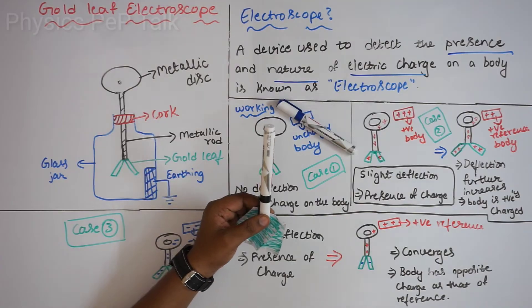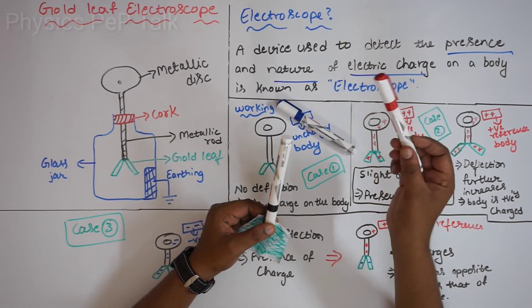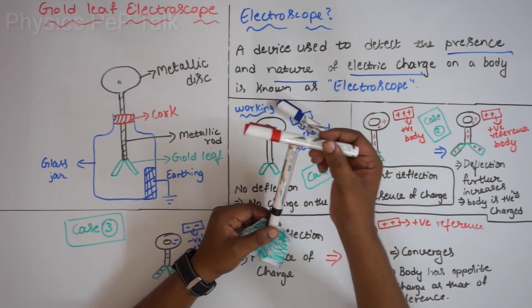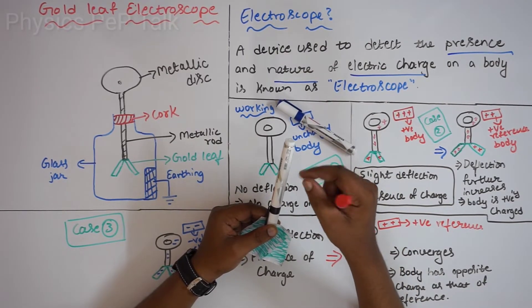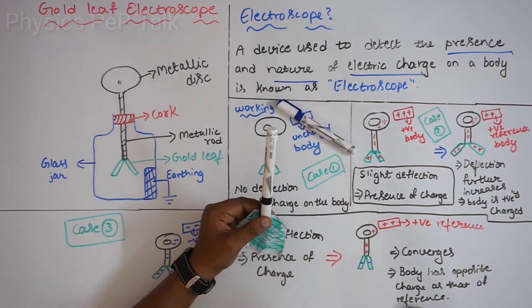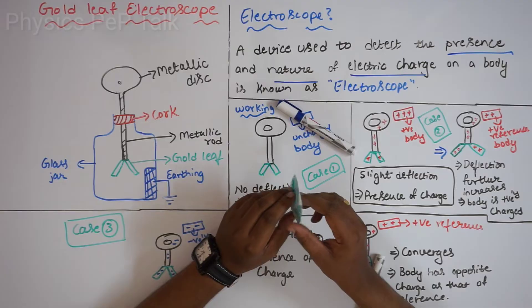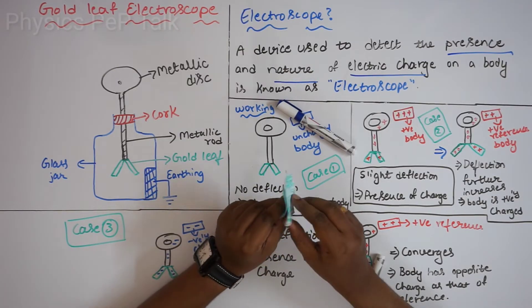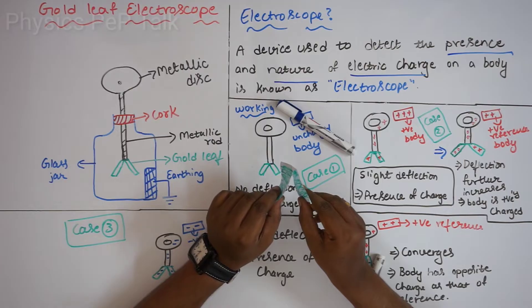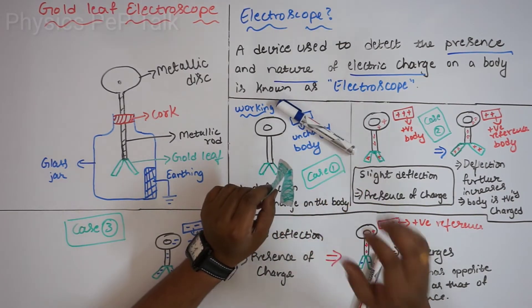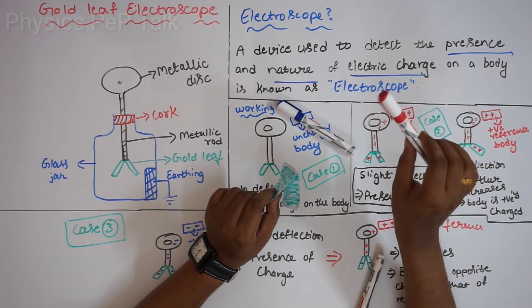Now let me introduce a positively charged body and touch it. As a result, electrons transfer and the body becomes positively charged. The gold leaf gets evenly charged because it is a good conductor. As a result, positive charges repel each other, so the gold leaf shows deflection by some angle. From this step we can say this body is charged, but we cannot say whether it is positive or negative charge.